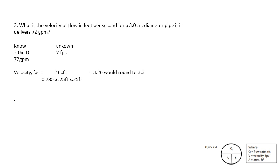One thing to point out: if you did the formula all together and didn't round the area intermediate step, you would actually get 3.26, which rounds to 3.3. On any test I've seen, answers are usually far enough apart that it doesn't matter, but I wanted to point out that rounding intermediate steps can give a slightly different final answer.